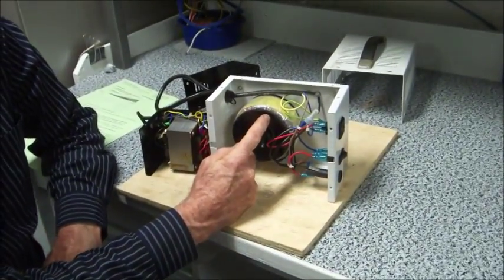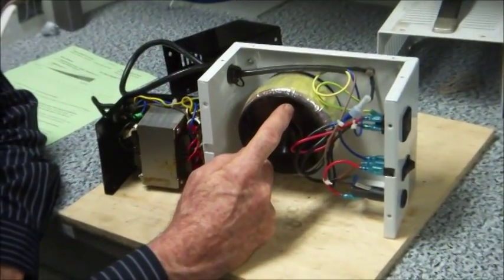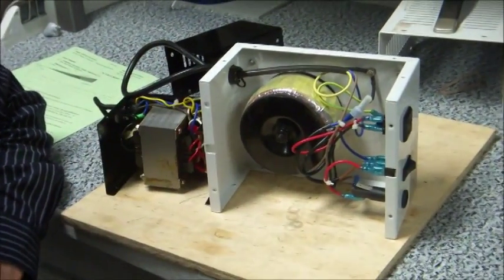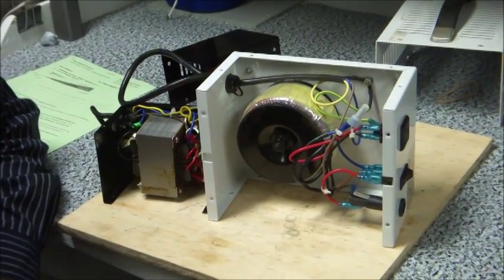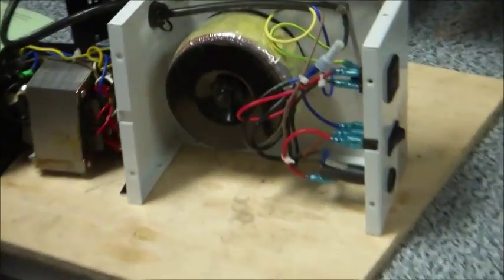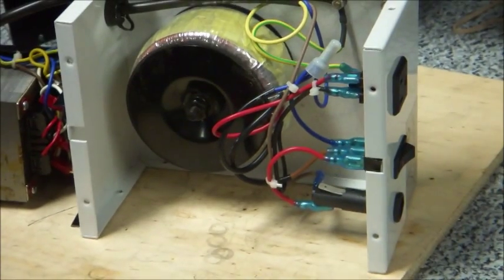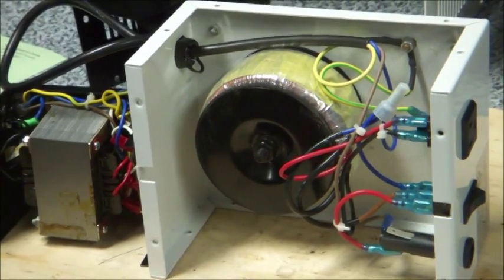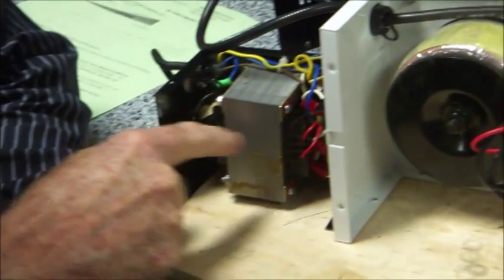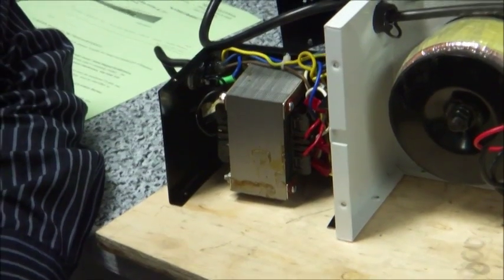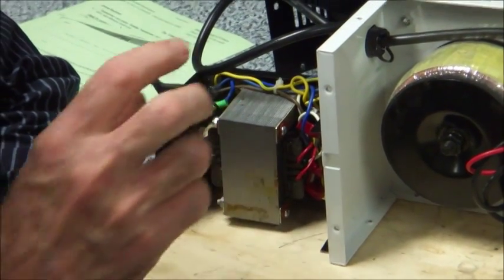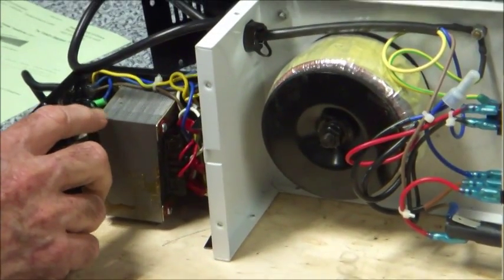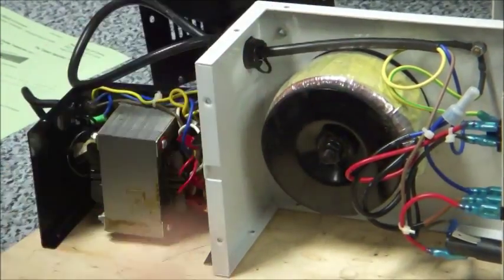Some of the features of the toroidal transformer compared to the EI transformer is that the toroidal transformer uses enamel wire, which is 180 degree insulation class. In other words, it can run at 180 degrees. It's also double coat. It's got a double layer of enamel. In the EI transformer, it only uses 105 degree insulation class or 130 degree insulation class wire and it's not as thermally capable as the toroidal transformer.